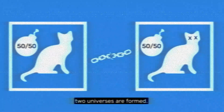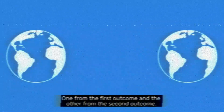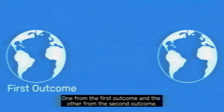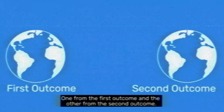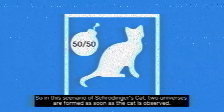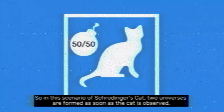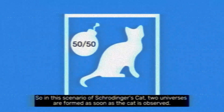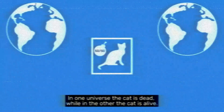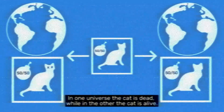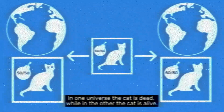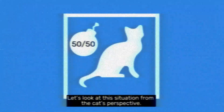In the many worlds interpretation, as soon as a superposition is broken, two universes are formed — one from the first outcome and the other from the second. So in this scenario of Schrödinger's cat, two universes are formed as soon as the cat is observed. In one universe the cat is dead, while in the other the cat is alive.